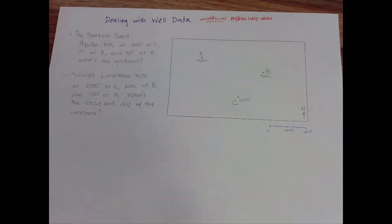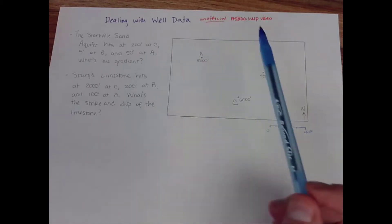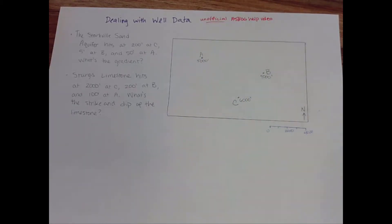So let's say that you get a question that has three data points on a map. Your brain should immediately go to three-point problem whether it's asking you to deal with the gradient in an aquifer or if it's asking you about what the attitude of a bed would be that you hit in these three wells.